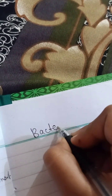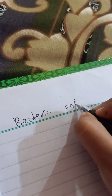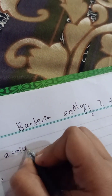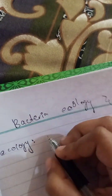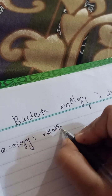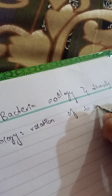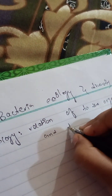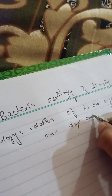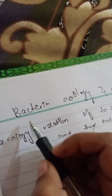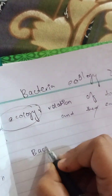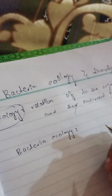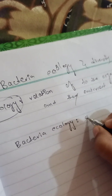The next topic is bacteria ecology and diversity. Ecology is derived from the ecosystem — it is basically the study of the relation between organisms and their environment. Bacteria ecology is the study of the relation of bacteria with other organisms and the environment.